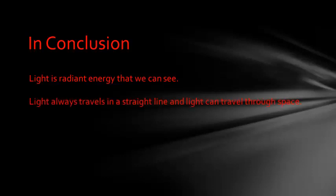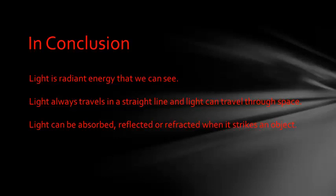So in conclusion, we will be learning in this unit that light is radiant energy that we can see. That light always travels in a straight line, and light can travel through space. That light can be absorbed, reflected, or refracted when it strikes an object. And that the way light behaves allows us to see the world in the way that we do. As we begin this new topic of light and shadows, we will be conducting many interesting experiments to help us understand these concepts. Thanks for viewing. I hope you found this to be an interesting introduction to our topic.